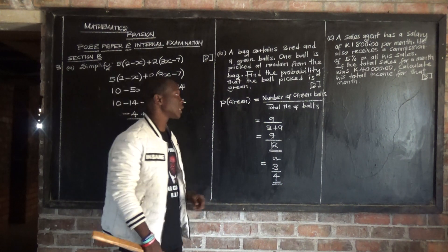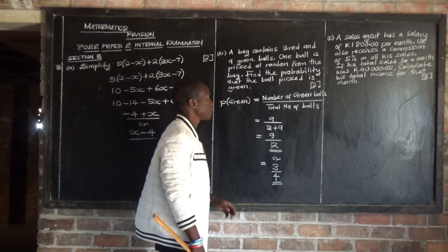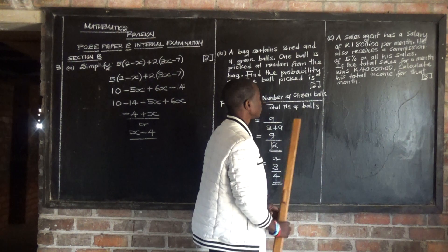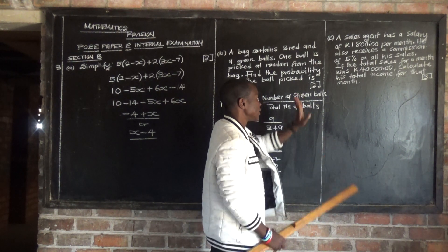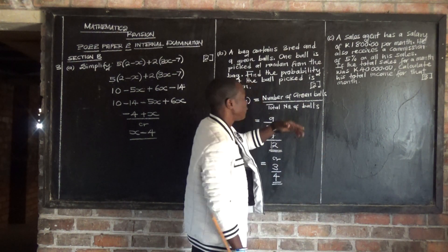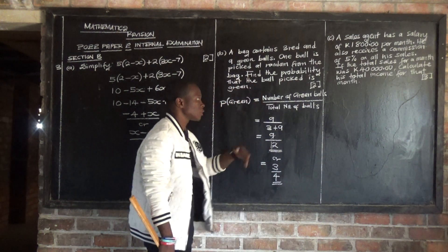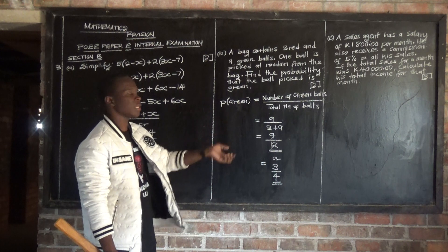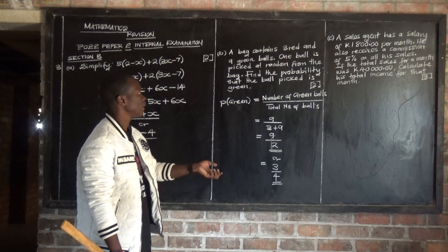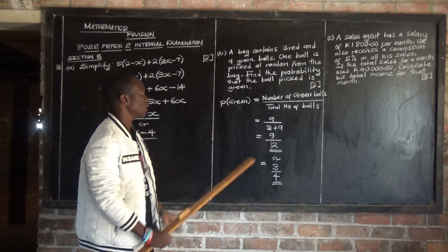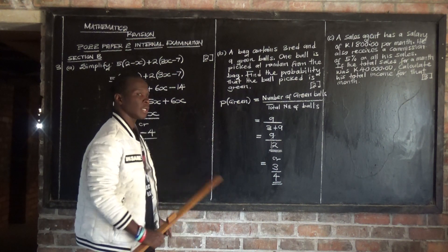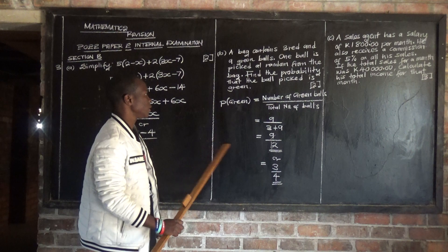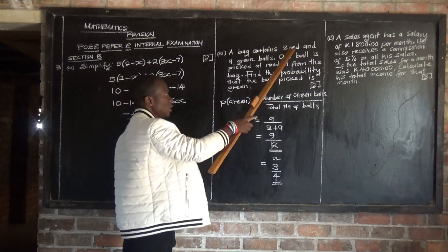Now, if we had been asked: what is the probability of picking a red ball? The red probability would have been three over 12.